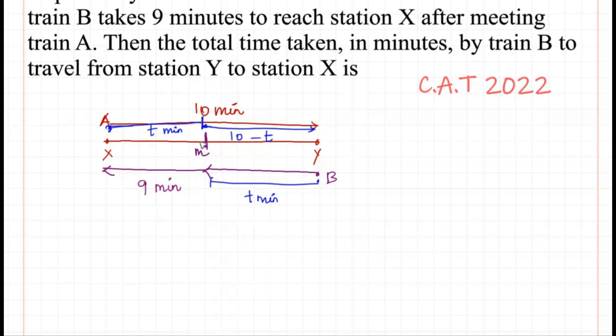When two bodies travel equal distances at constant speeds, the ratio of times taken by them to travel those distances will be the same. So we have (10-t)/t = t/9.